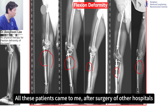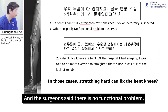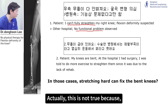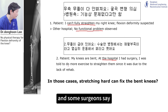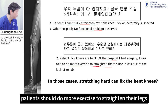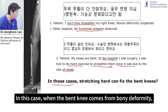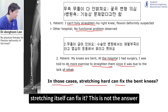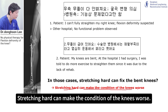All these cases are deformity of the bones. All these patients came to me after surgery at other hospitals. They said they couldn't fully straighten their knees and the surgeons said there is no functional problem. Actually, this is not true, because if patients cannot fully straighten their legs, they have functionally shortened legs. Some surgeons say patients should do more exercise to straighten their legs because it is due to lack of rehabilitation. When bent knee comes from bony deformity, stretching itself is not the answer — stretching worsens the situation and can make the condition of the knees worse.